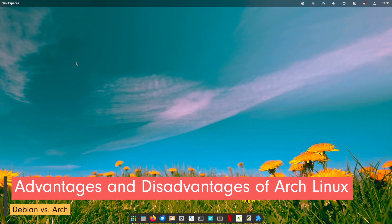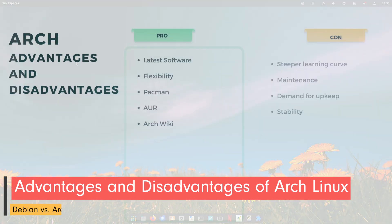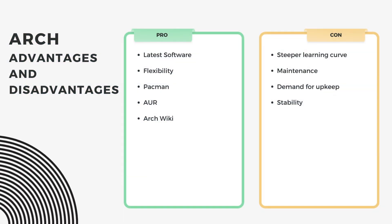As always, there are advantages and disadvantages of Arch Linux. Advantages: access to the latest software versions through rolling releases, unparalleled flexibility and customization options, efficient package management with Pacman, extensive software repository via the AUR, and rich well-maintained documentation on the Arch Wiki. Disadvantages: steeper learning curve particularly for newcomers, requires proactive maintenance due to rolling release updates, may demand more time and effort for day-to-day upkeep, and potential stability concerns compared to Debian's conservative approach.